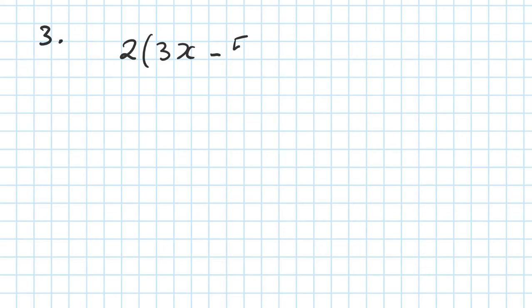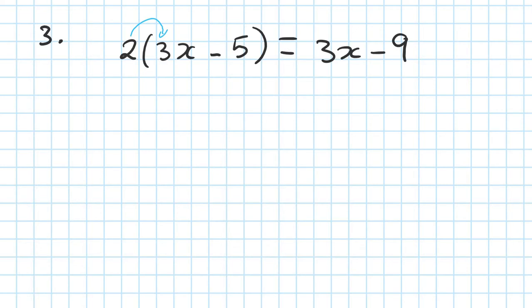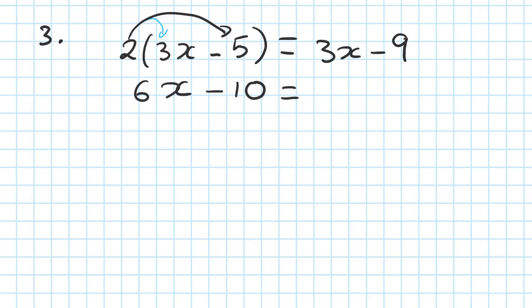Number 3. Let's say 2 times (3x minus 5) is equal to 3x minus 9. With these questions, step number 1 — you need to remove the bracket first. So I need to remove this first; I times this together. So that means 2 times 3 is 6, but it's 6x, because 2 times 3x — so 6x. And 2 times minus 5 is negative 10. On the right-hand side, I didn't do anything; I just copied that out. That is your first step: remove the bracket by expanding it first.